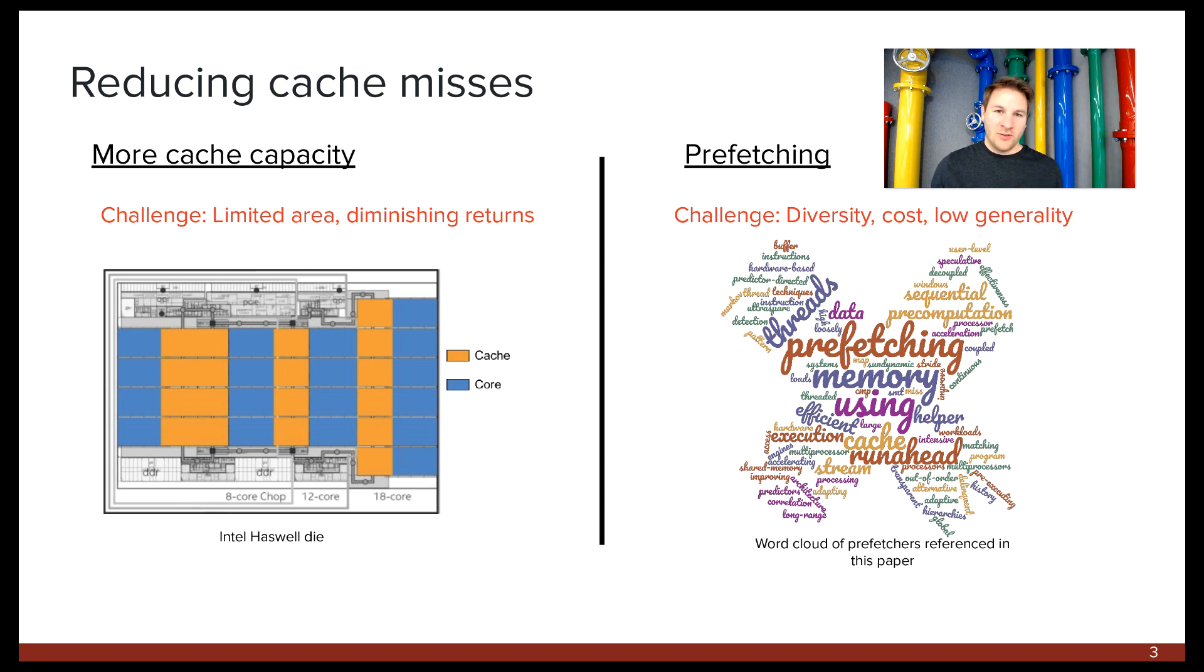So what can we do to reduce cache misses? The two most common approaches are to increase cache capacity and to use prefetching. But both of these approaches have challenges. First of all, on-chip area is already heavily utilized for caching, sometimes taking up as much space as the computational cores themselves. So there really isn't a lot of room to squeeze much more on there in the first place. Furthermore, caching often gives diminishing returns in performance when we have modest amounts of capacity. And the reason for this is that many workloads exhibit very little reuse or have working set sizes that are so large that they're never going to fit in the cache in the first place.